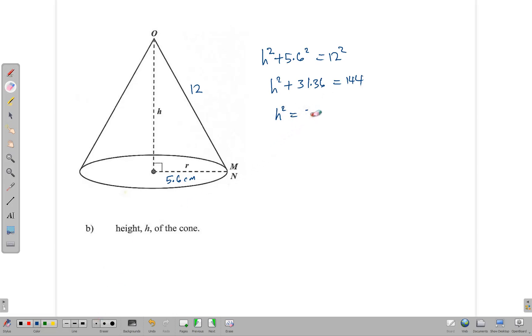That gives us h² = 112.64. You should go ahead and verify this on your device to make sure you get the same thing. To find h, the square root of 112.64 gives us 10.6 centimeters.